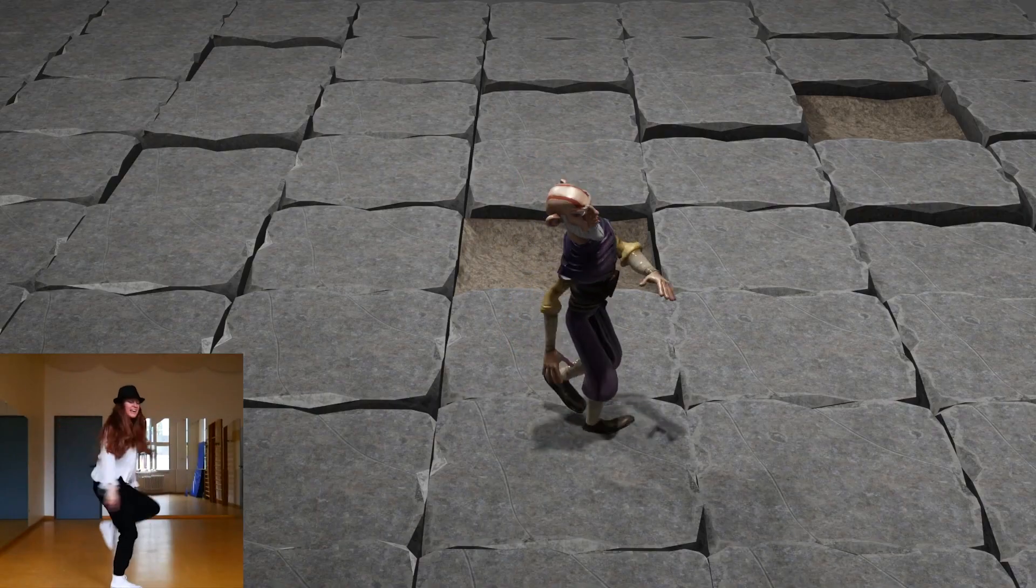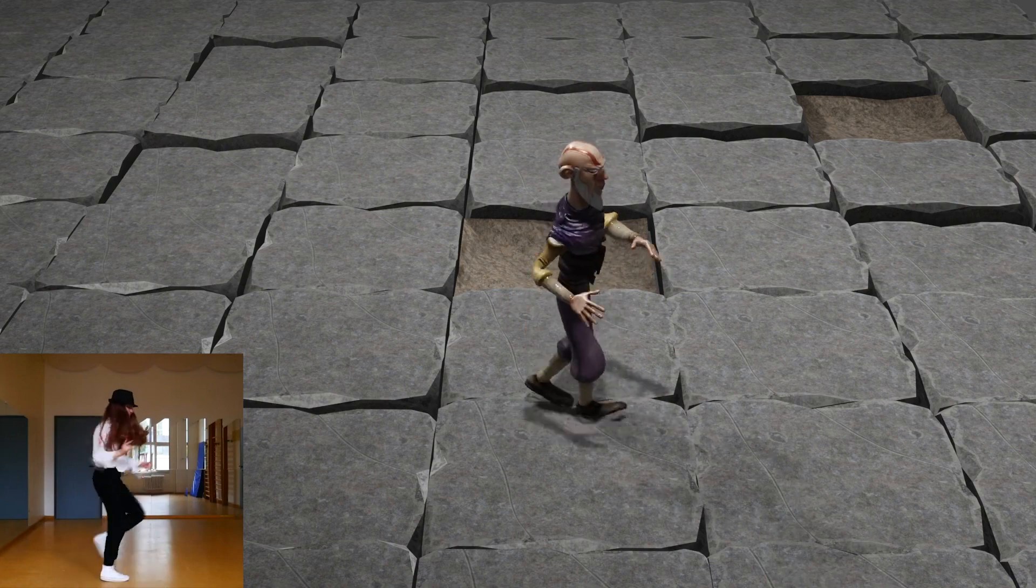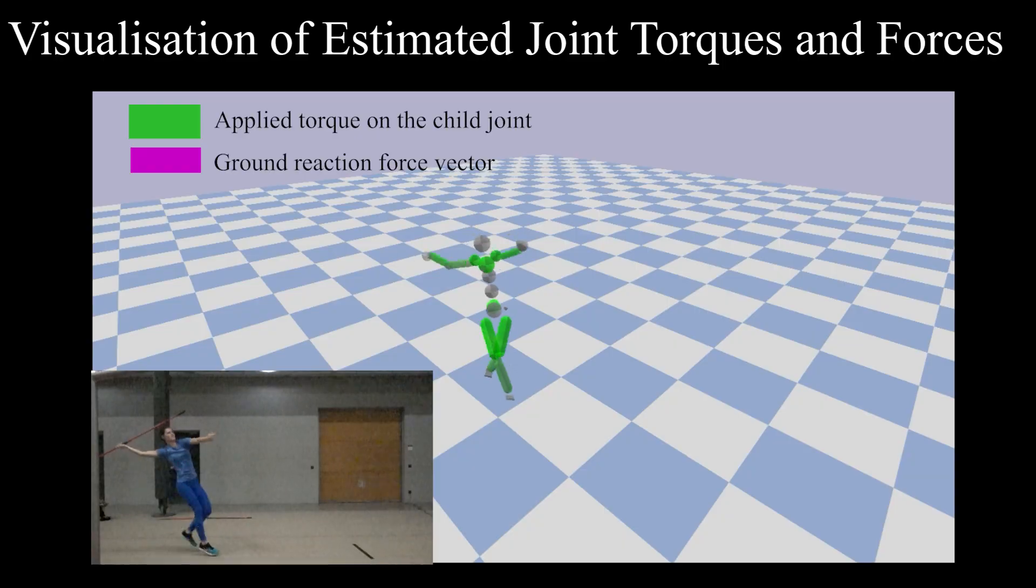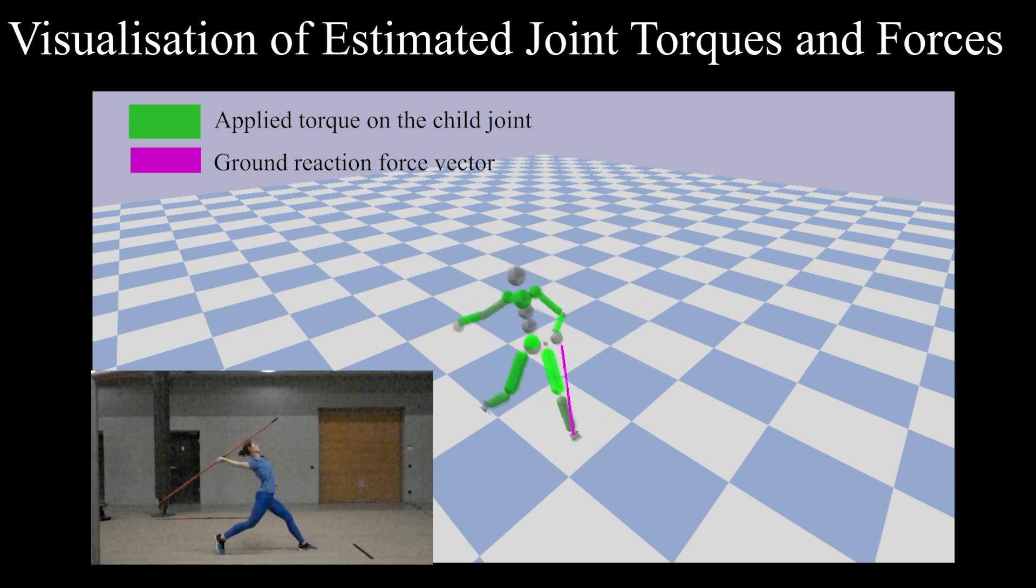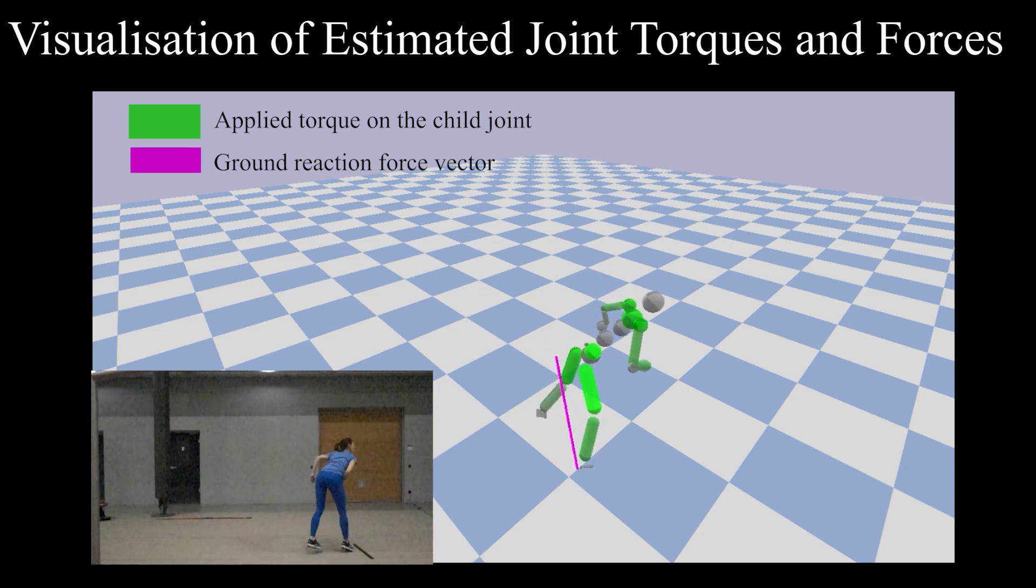Lastly, we show more results. Our 3D motion capture can directly drive a virtual character for computer animation. In this visualization, a more saturated green hue means that a stronger torque is applied on its child joint. The purple vectors represent the ground reaction forces, which are helpful, for example, for providing feedback in motion analysis, in this case, while practicing javelin throw.